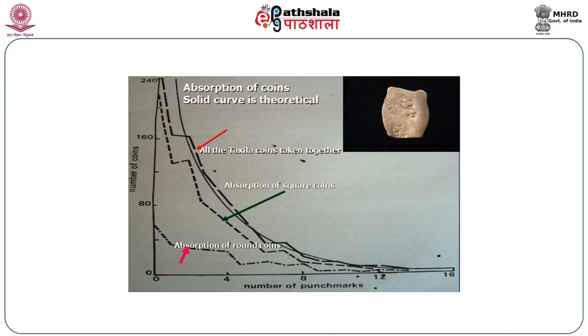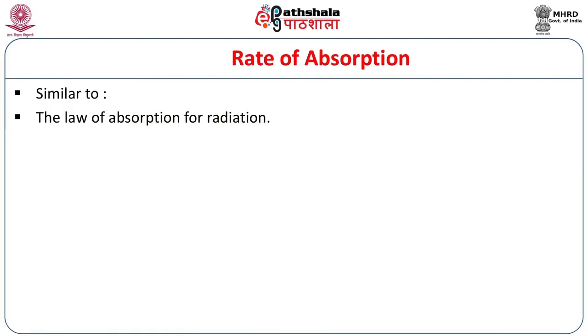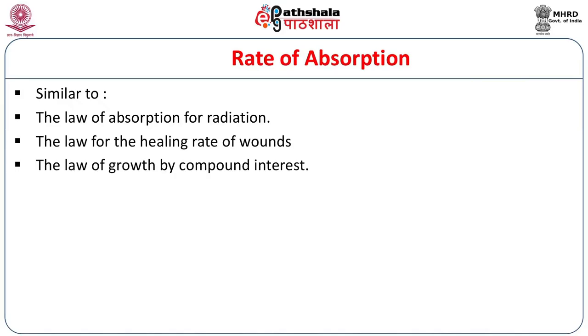As Kosambi mentions, the rate of absorption is similar to the law of absorption of radiation, the law of healing rate of wounds, and the law of growth by compound interest. John S. Dell and Patterson have also applied this absorption of coin theory. Whether it is universal or varies from coin to coin depends on the kind of circulation and the kind of remnants. The rate of absorption or diminution of coins in circulation is measured by the half-life — the time taken for survivors to be reduced to half their original numbers.